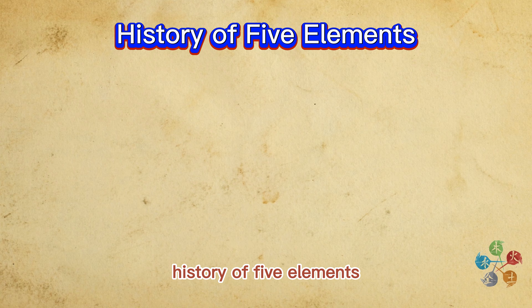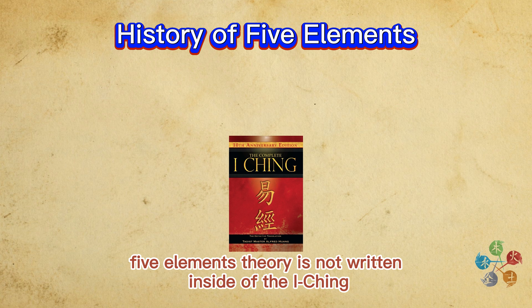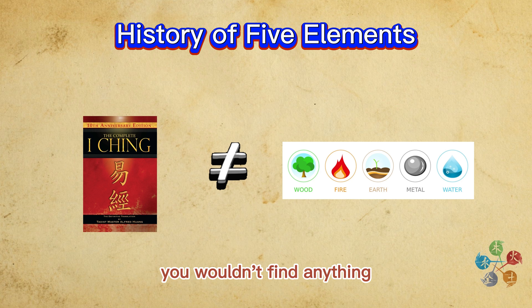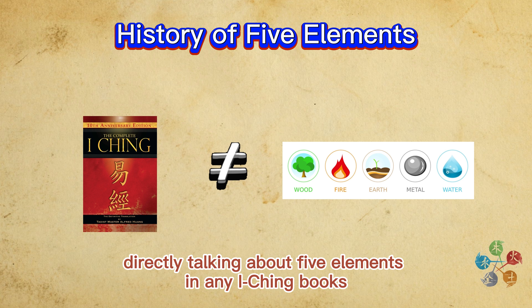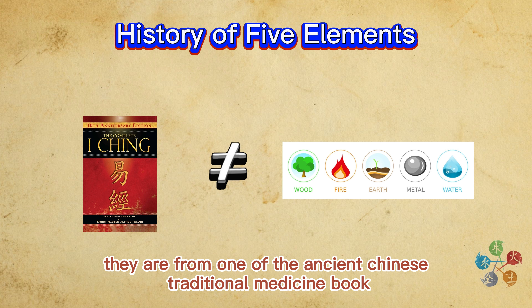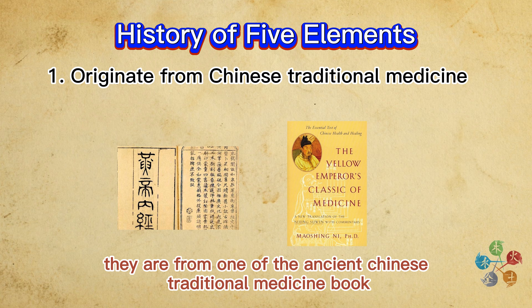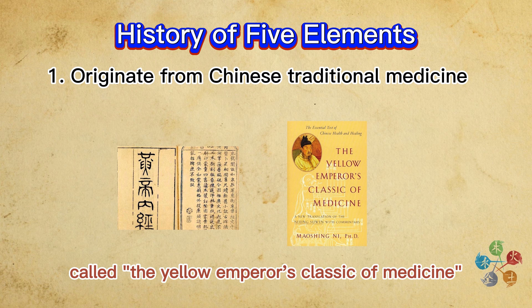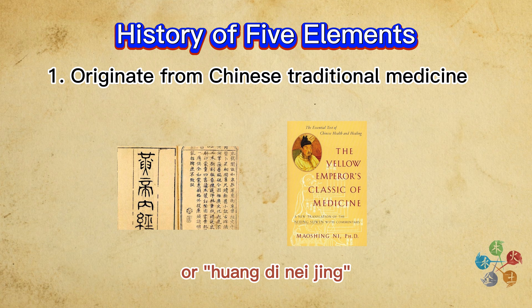History of Five Elements. Five Elements theory is not written inside the I Ching — you wouldn't find anything directly talking about five elements in any I Ching books. Some scholars said they are from one of the Asian Chinese traditional medicine books called The Yellow Emperor's Classic of Medicine, or Huang Di Nei Jing, discovered in the Han Dynasty.